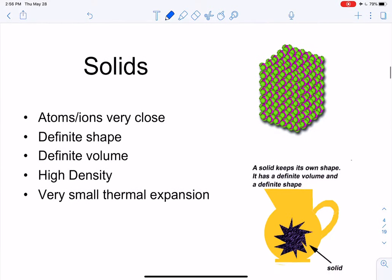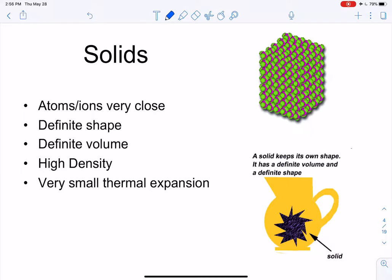Solids have atoms or ions that are really, really close together with virtually no space between them. They tend to be stuck in place, giving them a definite shape and a definite volume — a block of aluminum keeps its shape regardless of the container. Solids also have high density and very little thermal expansion because the particles are strongly attracted to each other. Very little thermal expansion doesn't mean no thermal expansion.